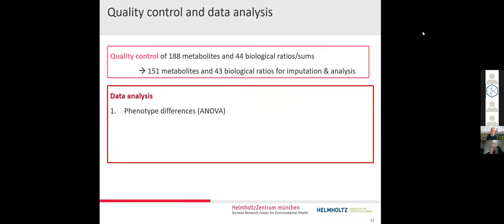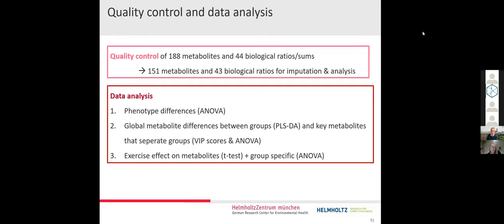The data analysis was done in three steps. The first step was the analysis of phenotype differences to verify if the athletes and control groups are actually different in key phenotypical parameters using an ANOVA. The second step was a global analysis of metabolite differences between groups done by PLSDA, also identifying key metabolites that separate these groups. In the end, we looked at the group-specific effect of exercise on metabolites.